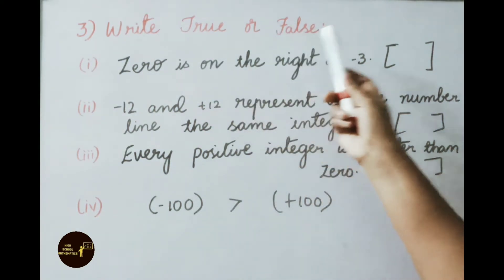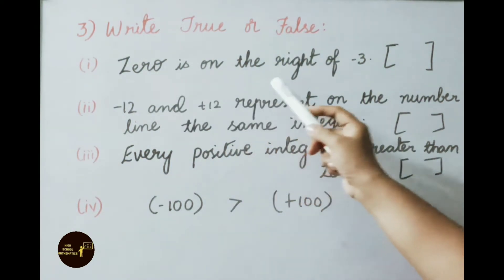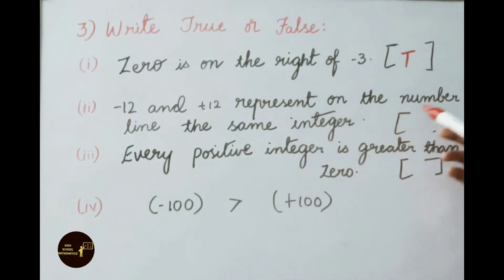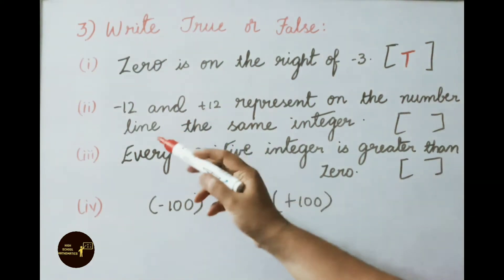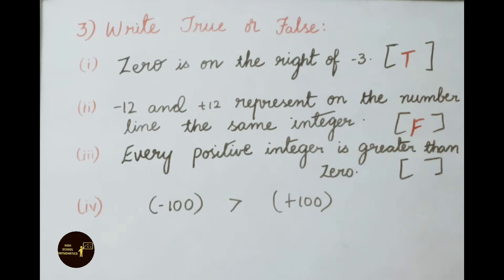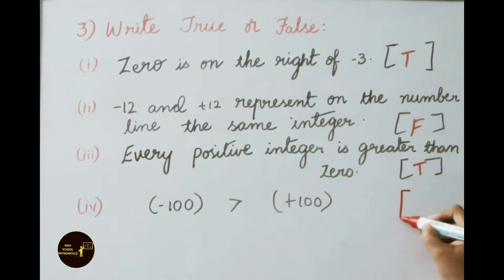Question 3: Write true or false. First: 0 is on the right side of minus 3. For all negative numbers, 0 is present to the right side, so this is true. Second: minus 12 and plus 12 represent the same integer on the number line. Minus 12 and plus 12 are different, so this is false. Third: every positive integer is greater than 0 — true. Fourth: minus 100 is greater than plus 100. Negative integers are always less than positive integers, so this is false.